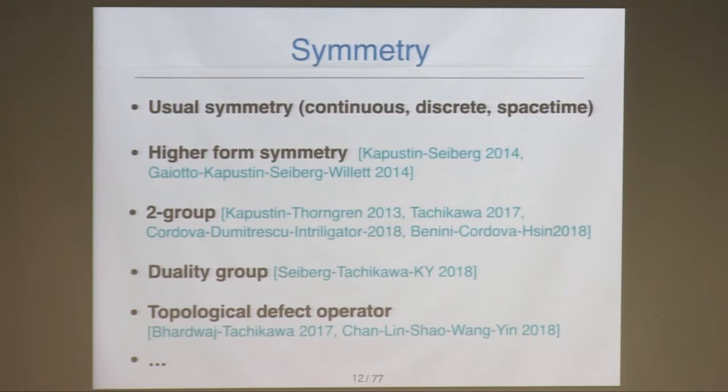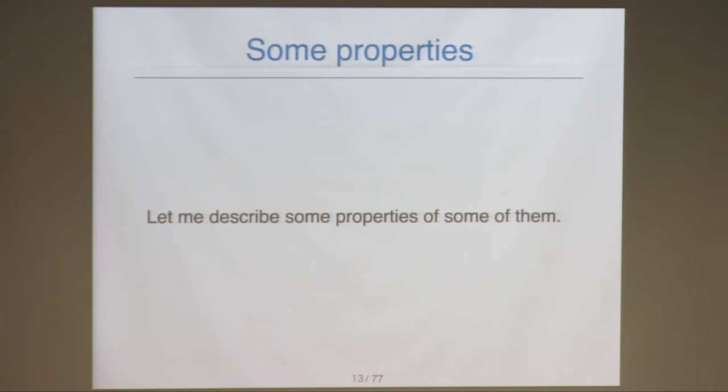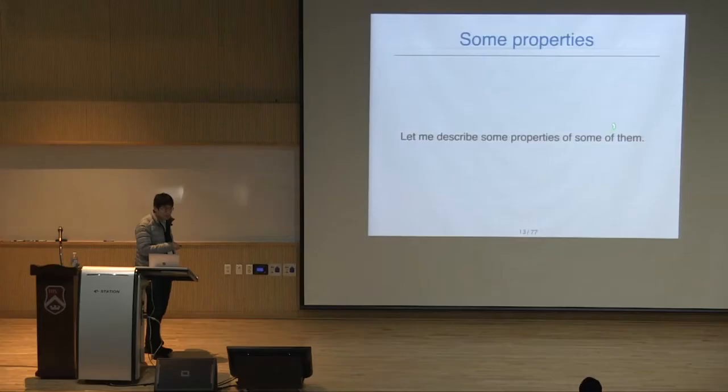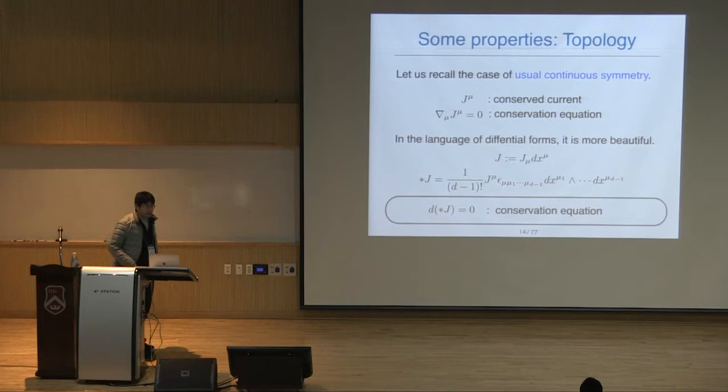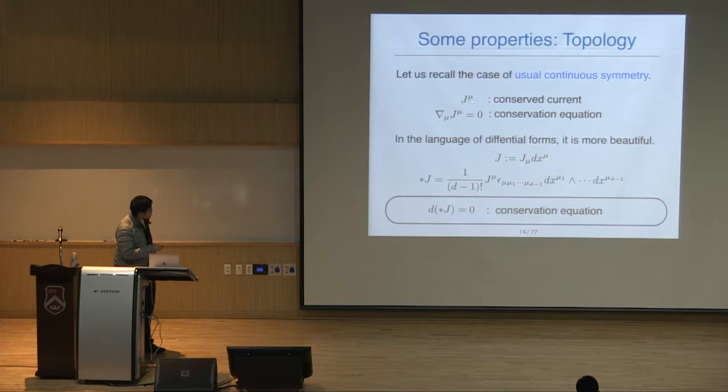Let me describe some properties of some of them. Let's start from the case of usual continuous symmetry. In this case, we have a conserved current J_μ, and this conserved current satisfies the conservation equation ∂_μ J^μ = 0.